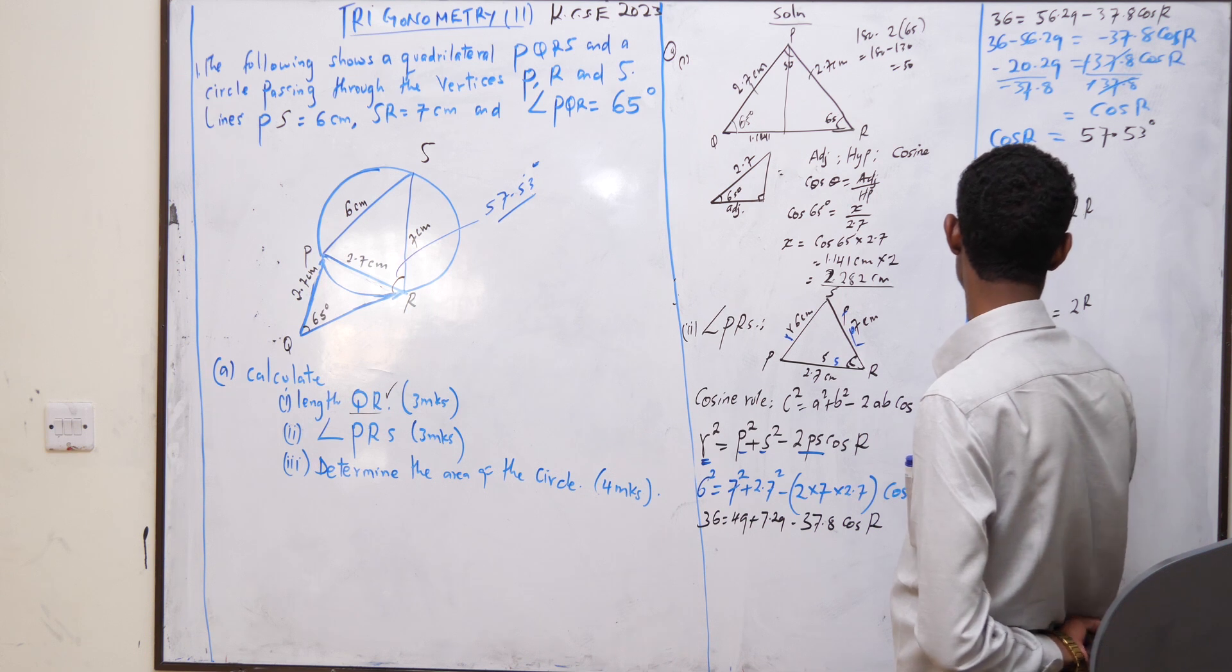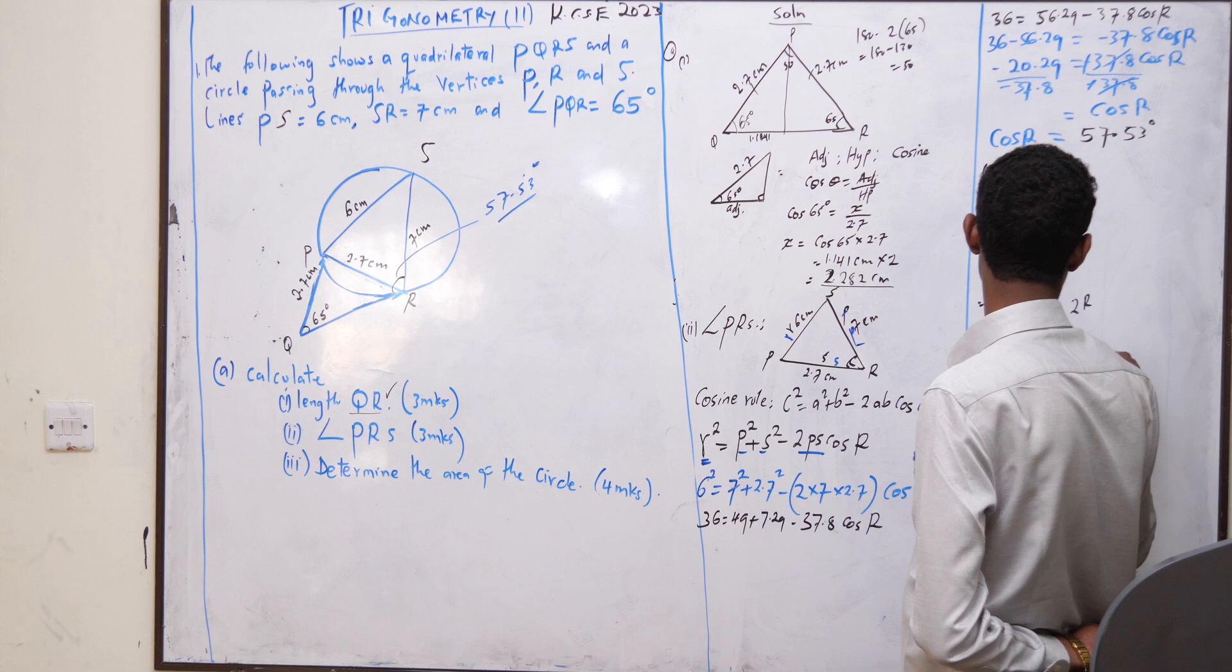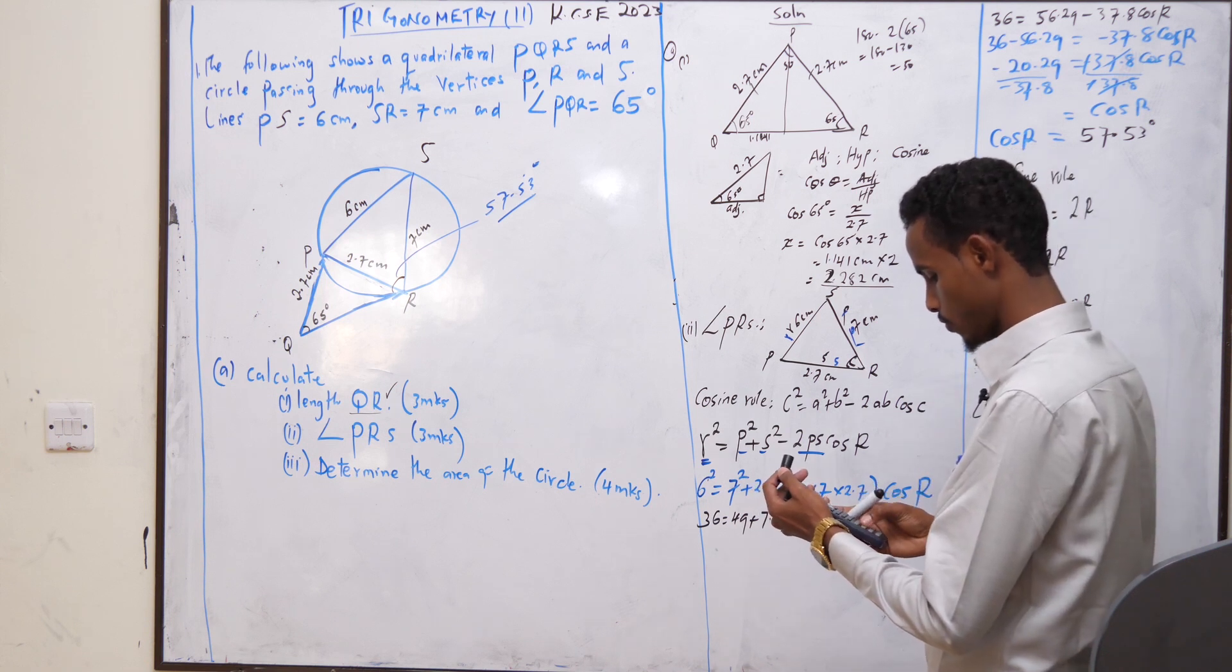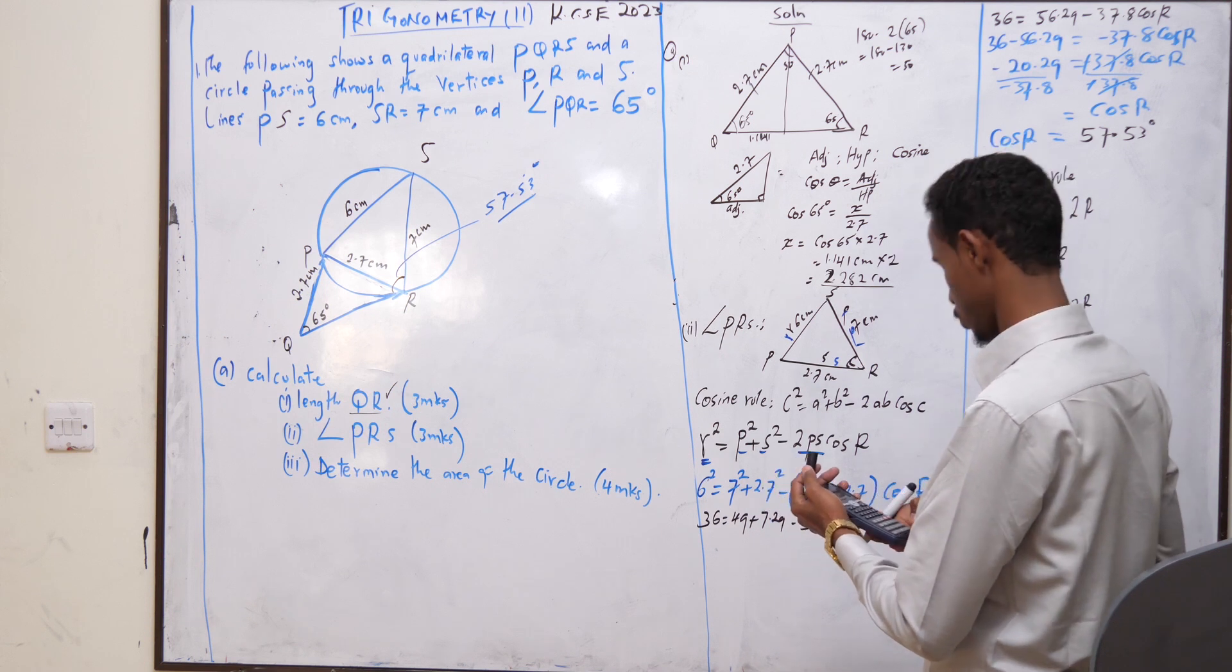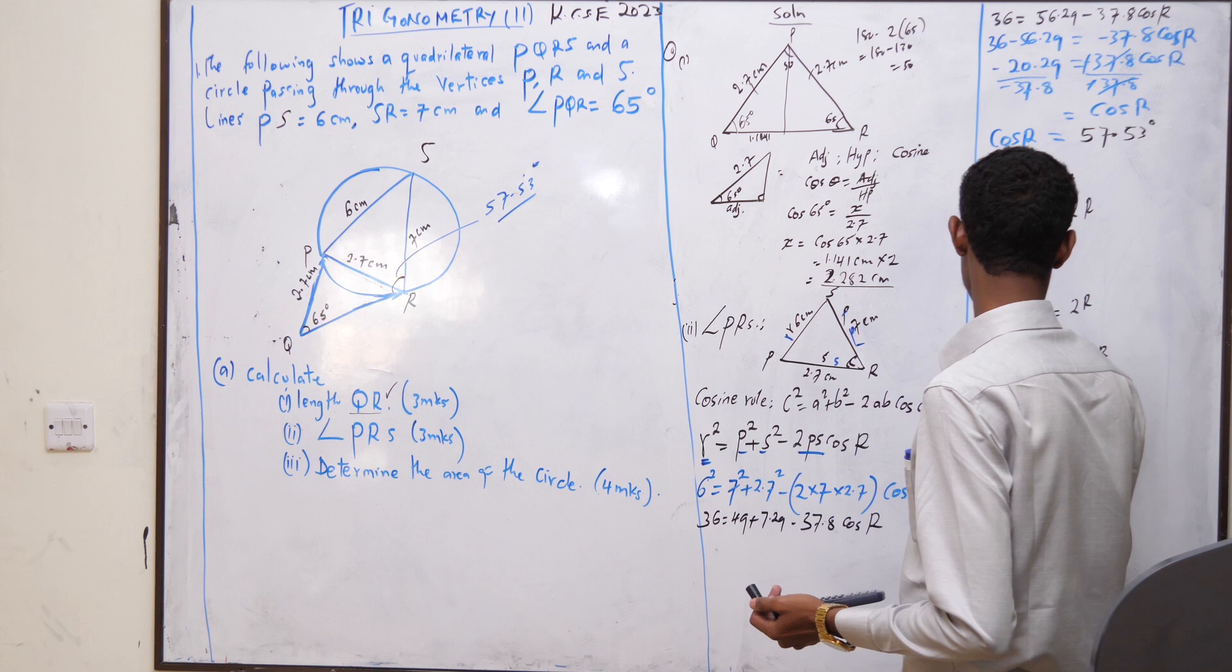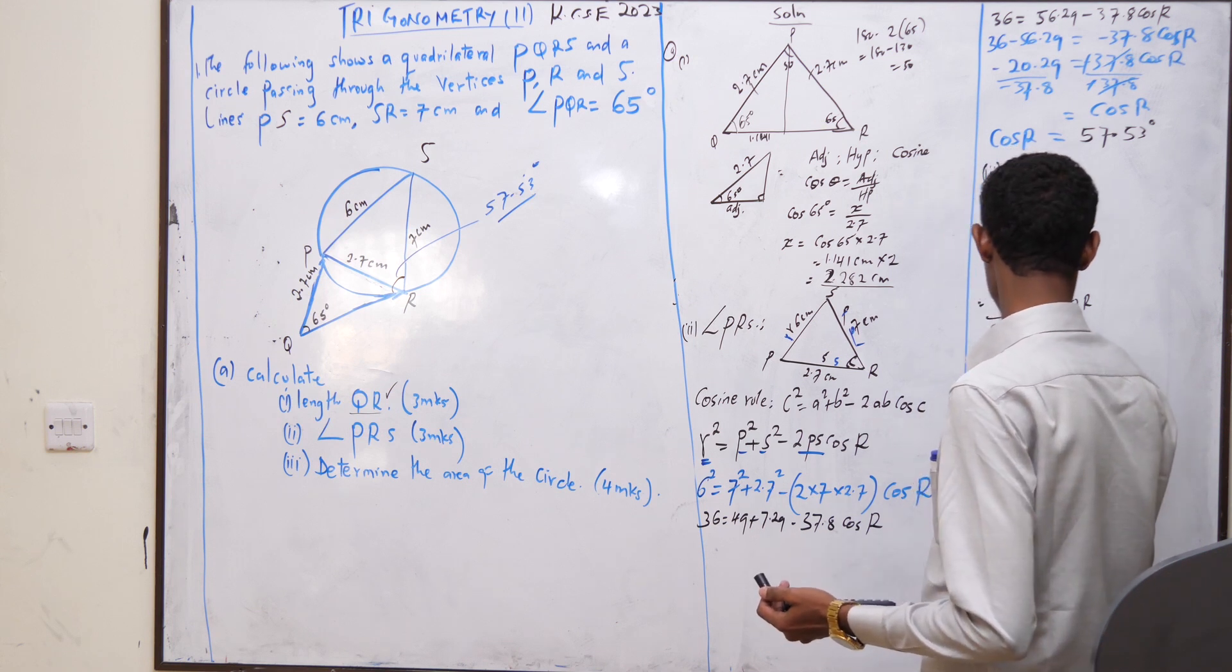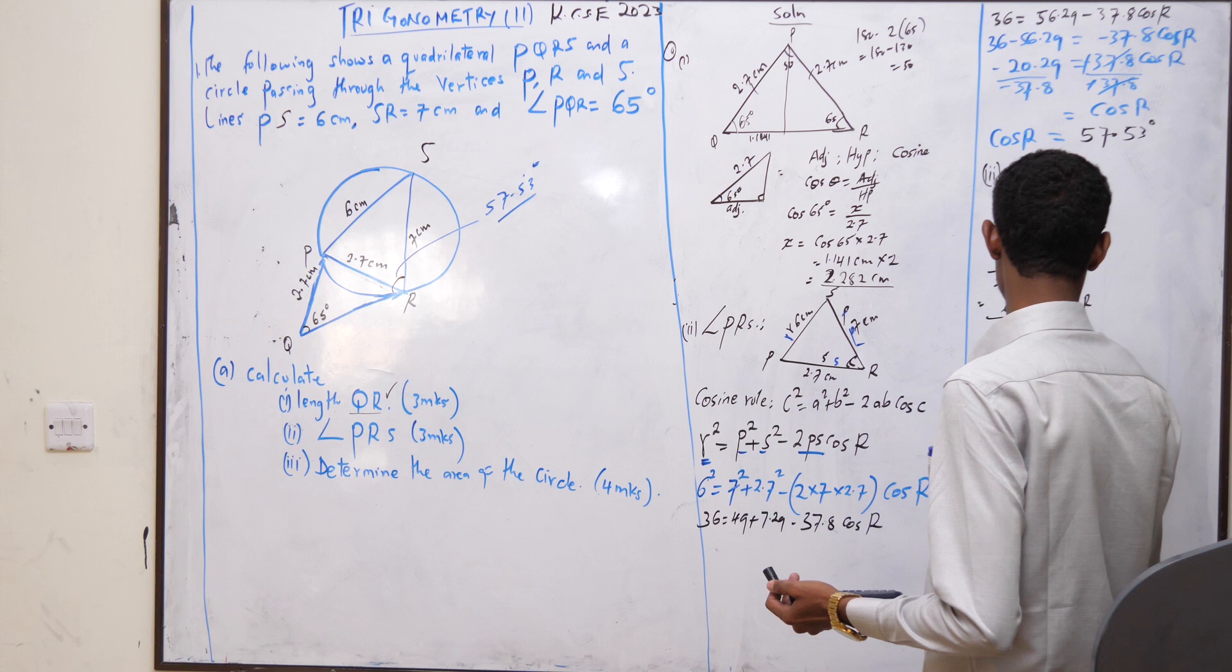6 equals sine 57.53 times 2R. It becomes sine 57.53 times 2, 1.687. 6 equals 1.687R. Divided by 1.687.